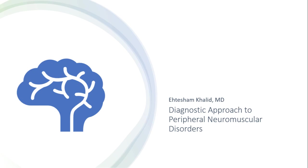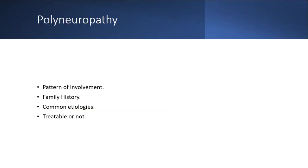Today's presentation is about the diagnostic approach to peripheral neuromuscular disorders. For neuropathy, understand the pattern of involvement — proximal, distal, combined, or distal predominant — whether there is a family history or not, common etiologies, and ultimately whether it is treatable or not.